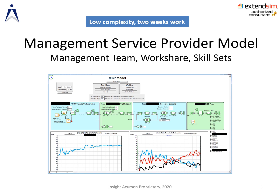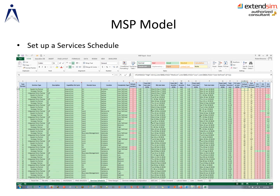For the management service provider model on the management team, we had services including strategic partner, capability partner, and integrated work partners. There's a bunch of setting up inputs to do in Excel to make it easy for the people using the model. In this particular table, we would set up a services schedule, choosing the services type, the complexity, and if we had a user-defined complexity, then we would be able to choose skill sets required further to the right in this table.